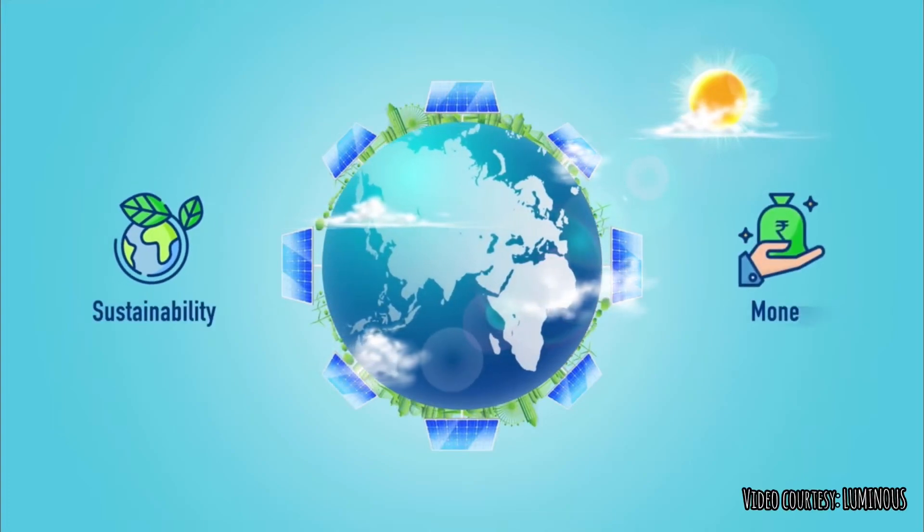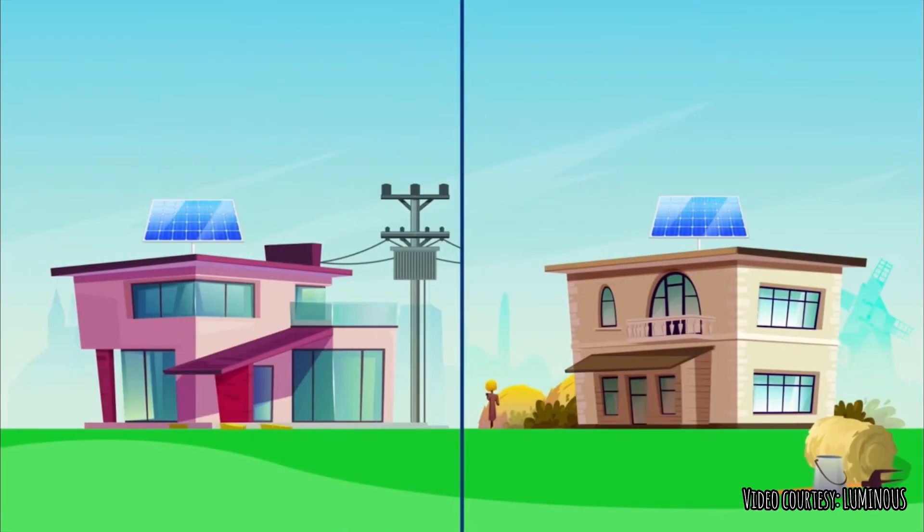The world is turning to solar for sustainability and cost-effectiveness. So let's talk about the two types of solar energy systems: on-grid and off-grid.